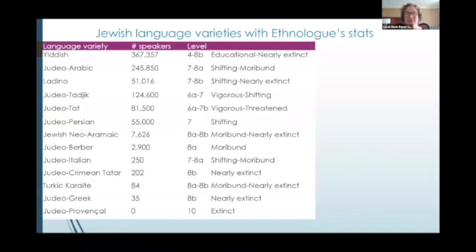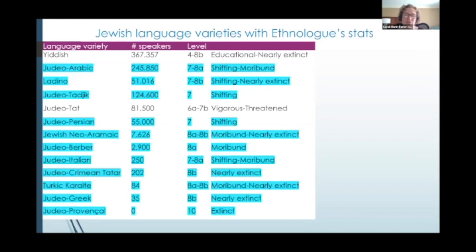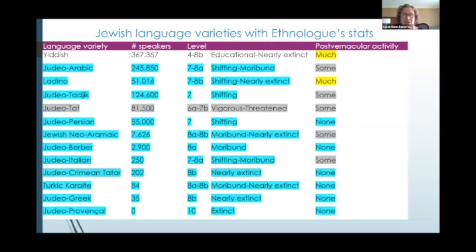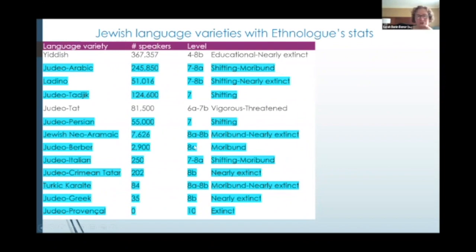So with these new notions of post-vernacularity and meta-linguistic community, let's take a look at the statistics on language vitality among various Jewish languages. We see that all of the languages listed here with their Ethnologue statistics are listed in phases that are endangered — from shifting at stage seven to extinct for Judeo-Provençal. Some of them are 8A or 8B. The only ones that are not endangered are Yiddish and Juhuri or Judeo-Tat.